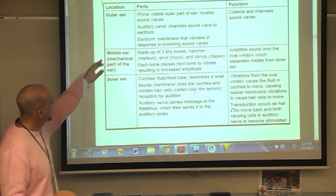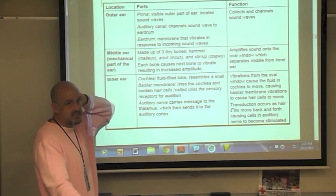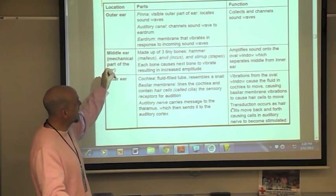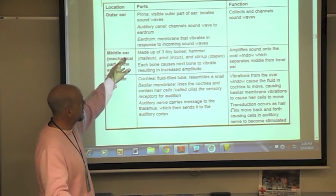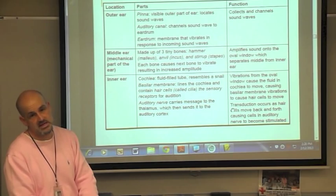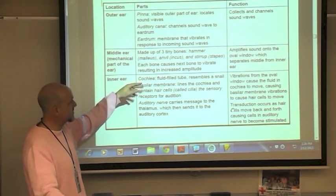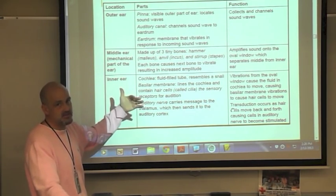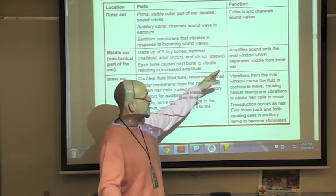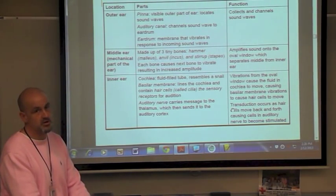The outer ear is the accessory structure that collects sound waves. The pinna is the visible outer part, the auditory canal channels sound waves to the eardrum — a membrane that vibrates in response to incoming sound waves. The middle ear, the mechanical part, contains three tiny bones: the hammer, anvil, and stirrup. Each bone causes the next to vibrate, resulting in increased amplitude that amplifies sound onto the oval window, which separates the middle ear from the inner ear.